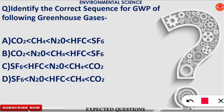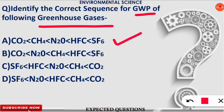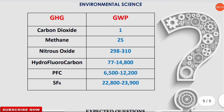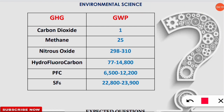The next question: identify the correct sequence for the global warming potential (GWP) of the following greenhouse gases in ascending order. The correct option here is option A. We'll see how this applies to the greenhouse gases by looking at the GWP table for the most important greenhouse gases.